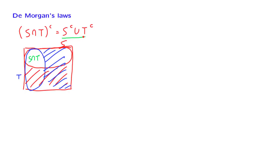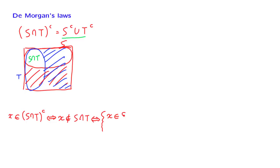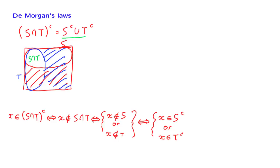If you are not convinced by this pictorial proof, let us go through an argument that is a little more formal. What does it take for an element to belong to the first set? In order to belong to that set, x belongs to the complement of S intersection T. This is the same as saying that x does not belong to the intersection of S with T. Since it is not in the intersection, this is the same as saying that x does not belong to S or x does not belong to T. But this is the same as saying that x belongs to the complement of S or x belongs to the complement of T, which is equivalent to saying that x belongs to the union of the complement of S with the complement of T. So this establishes the first De Morgan's law.